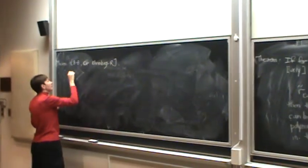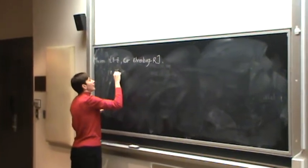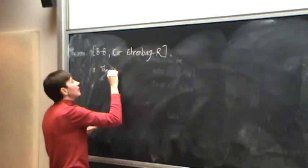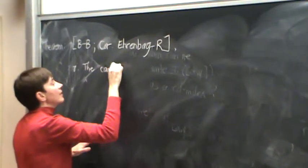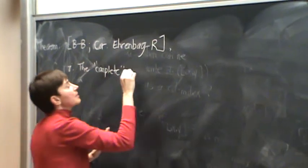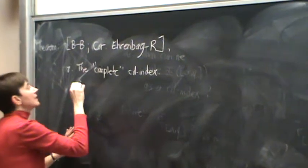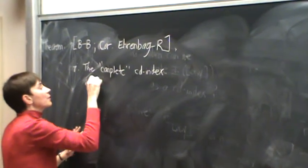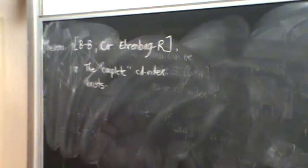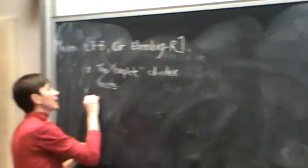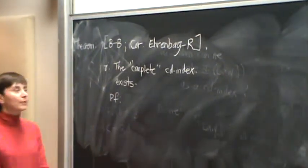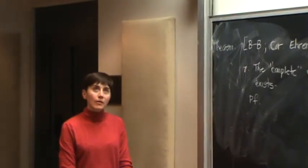So again, these results Valera and Brenti showed, but now, with all the stuff we've done, this is a corollary of machinery. So the first is that the, I'll write, they call it complete CD index, we just call it CD index, you know, we have different degrees. But the complete CD index exists, you know, the fact that you can have this writing.